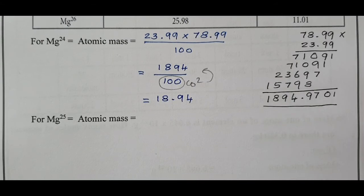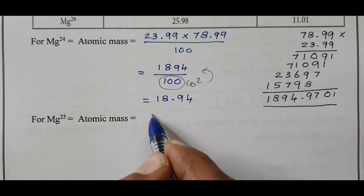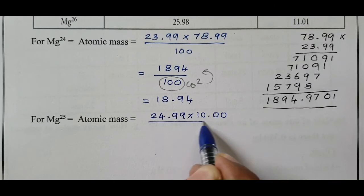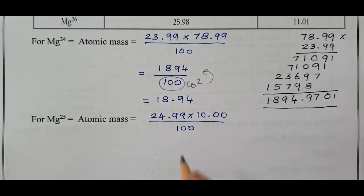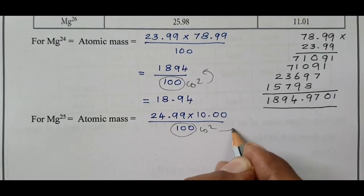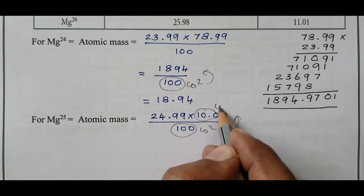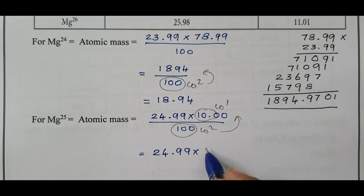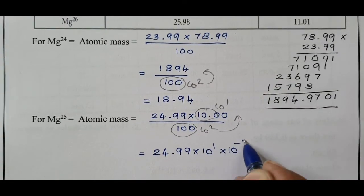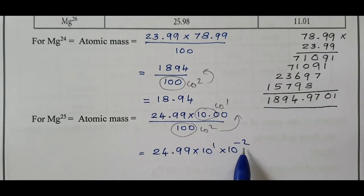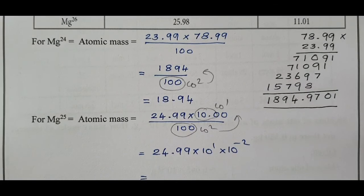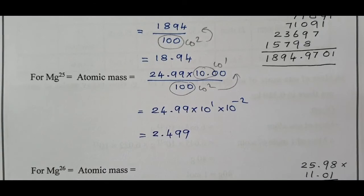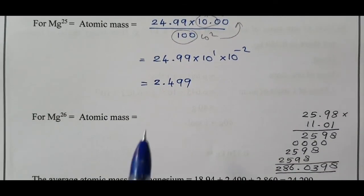For Magnesium-25, the isotopic atomic mass is 24.99 and abundance is 10, divided by 100. Since 100 is 10 power 2 and 10 is 10 power 1, bringing 10 power 2 to the numerator gives 10 power minus 1. Multiplying 10 power minus 1 with 24.99 gives the answer 2.499.